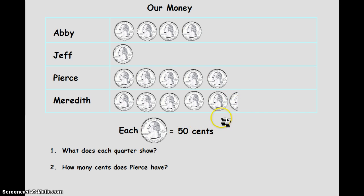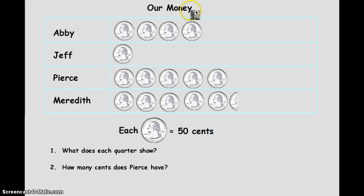Obviously that half means 25 cents — if a whole means 50 cents, half is 25. What you would do then to figure out the whole amount is to add it up. Obviously it also shows a quick comparison to show that Meredith has the most.